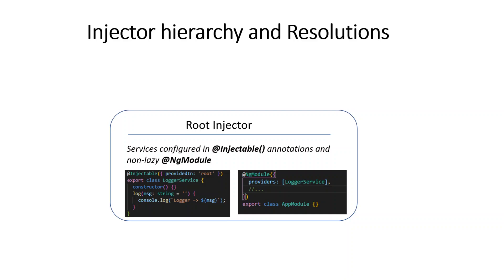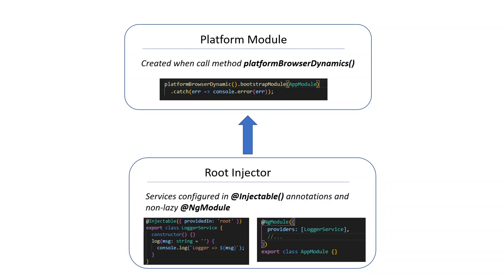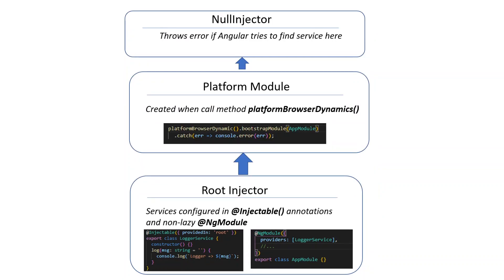There is also a platform module at the top level, which gets created when the application bootstraps and provides some services like DOM-related or sanitization-related services. There is also one more above that — the null injector. The responsibility of the null injector is simple: if a service tries to find an available object and nothing is found all the way to the top, the null injector throws a 'No provider found' error.